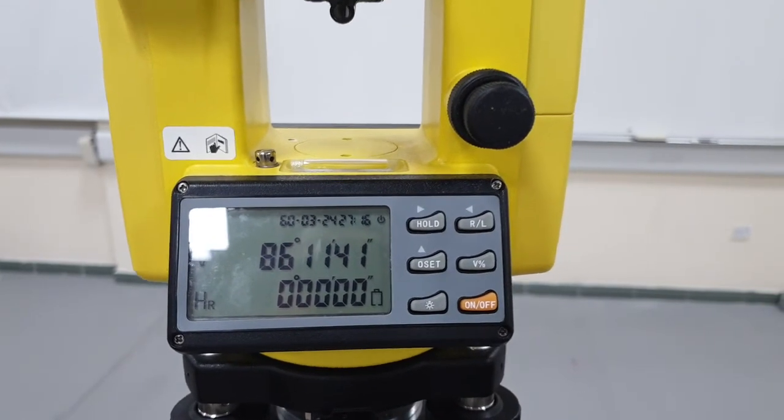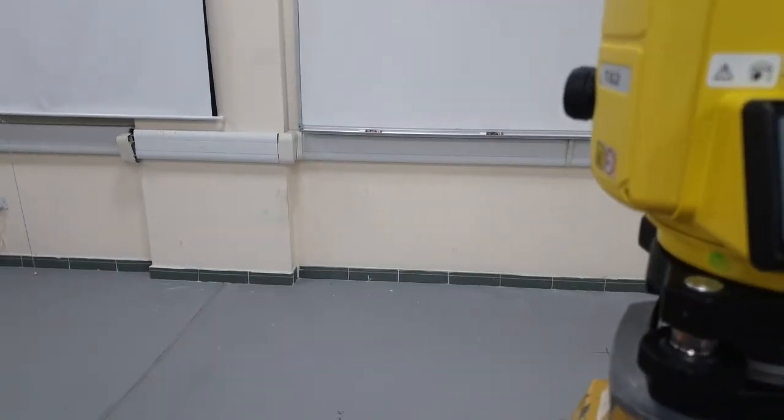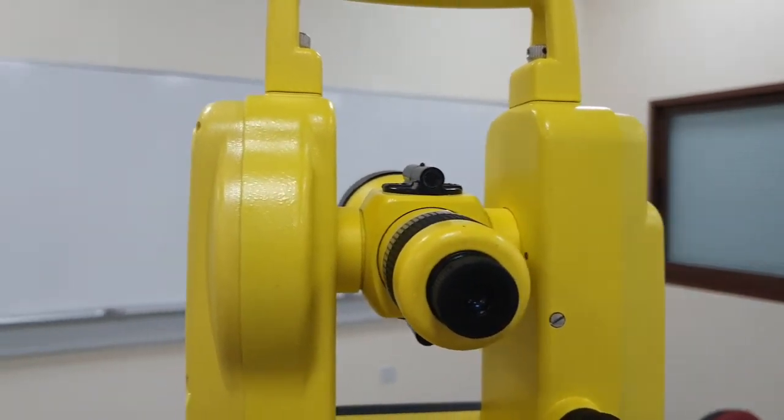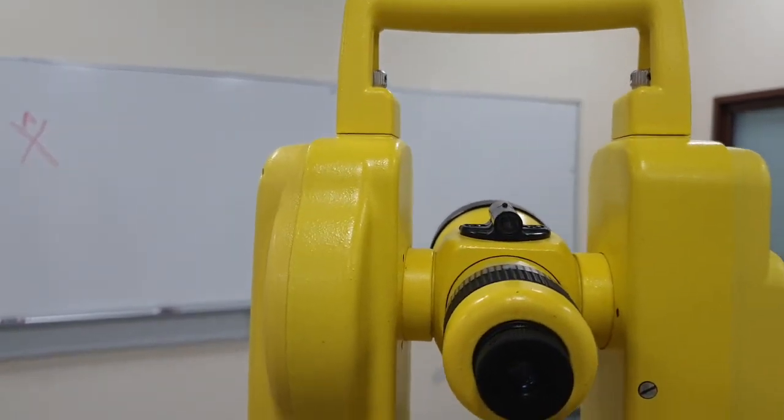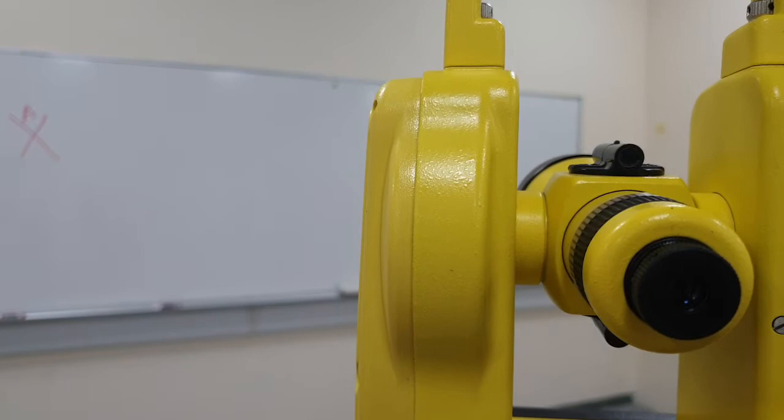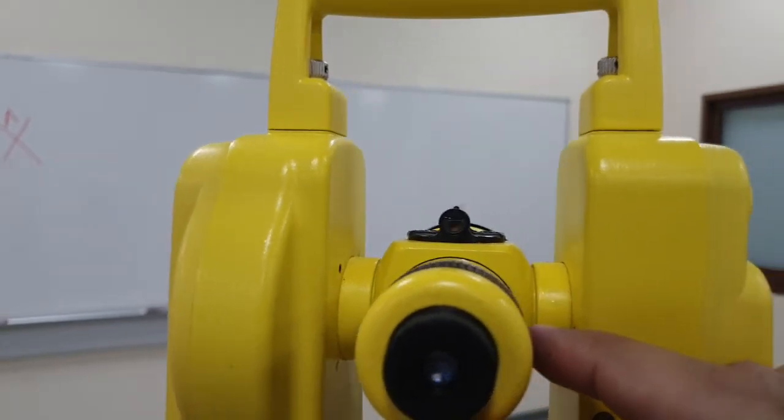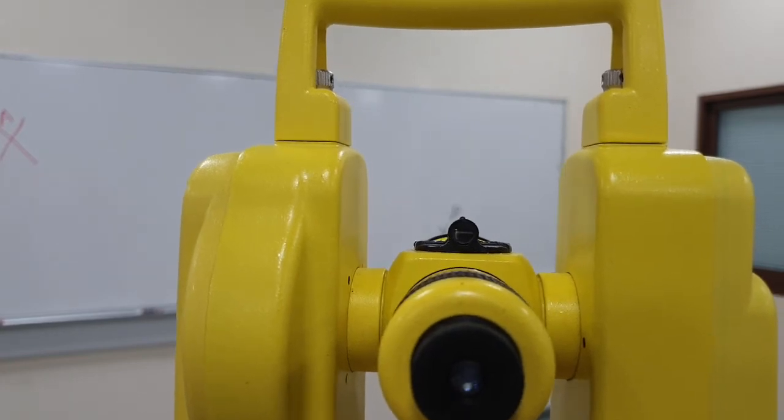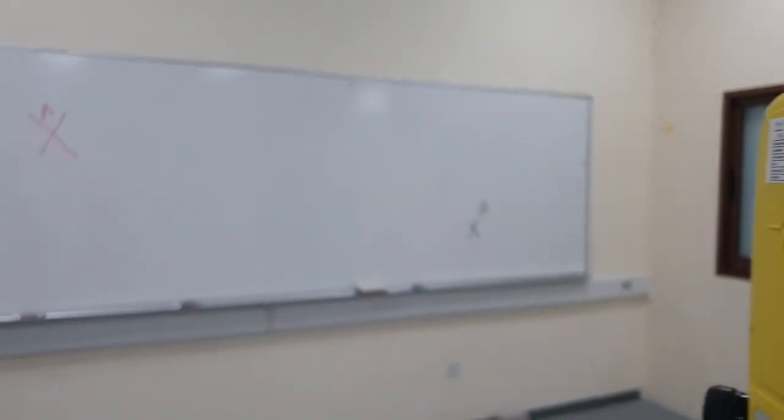Next we need to move to the next point which is B. First I center it horizontally, then vertically I use the X. As you can see here on the B point, at least like this. Then now I use the eyesight to focus, let me focus this.